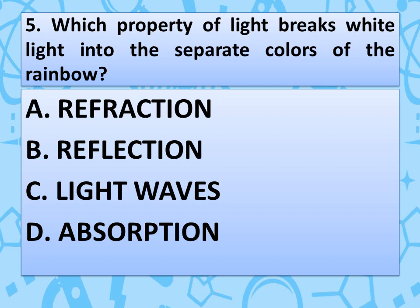Which property of light breaks white light into the separate colors of the rainbow? Read the options very carefully and give your answer in the comment box. The correct answer is option A — refraction.